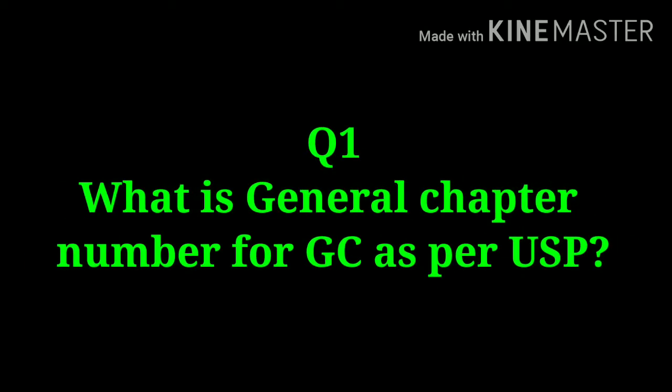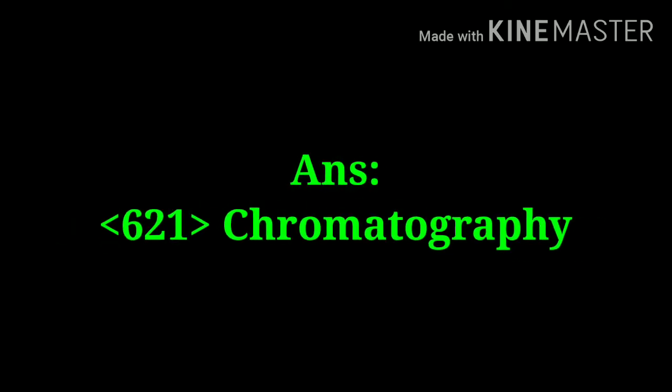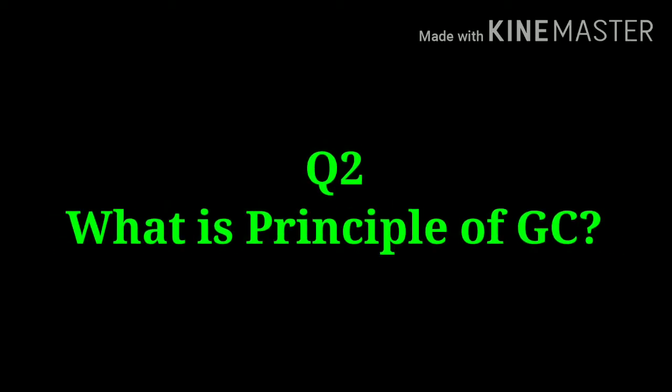The first question is: what is the general chapter number for GC? The answer is 621 — Chromatography is the general chapter number for GC. Next question: what is the principle of GC?